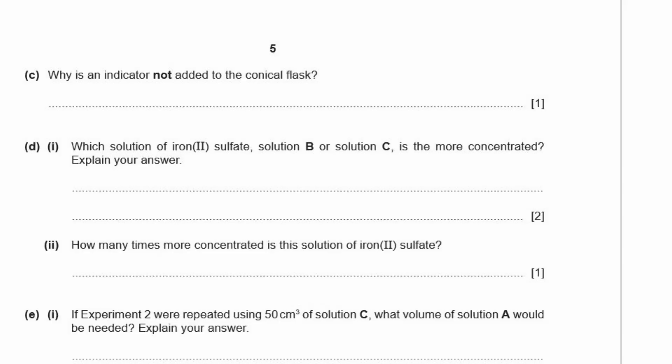C. Why is an indicator not added to the conical flask? Well, the reason why is because the reaction of potassium manganate and iron sulfate means that there will be a color change already at the endpoint. It already turns a permanent pink color at the endpoint. So the reaction already has a color change at the endpoint.